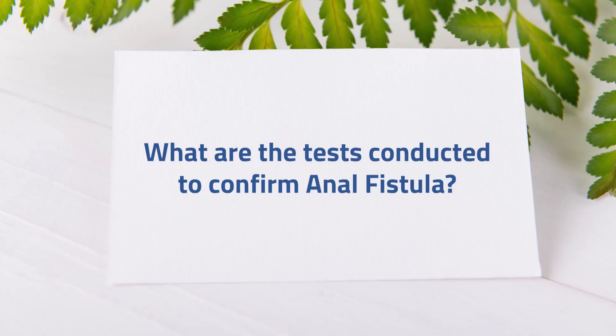What are the tests conducted to confirm anal fistula? Whenever somebody experiences symptoms like pain or pus discharge around the anus, one should consult a doctor immediately — preferably a surgeon. The surgeon will take a thorough history and examine you initially with a per rectal examination, that is examination of the anus. With a finger examination the doctor will examine initially, then they will use a special instrument called a proctoscope with illumination so that they can examine the opening thoroughly.